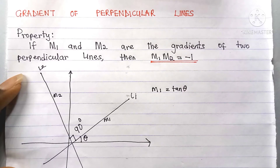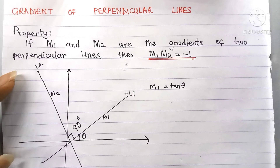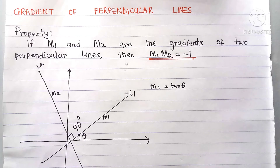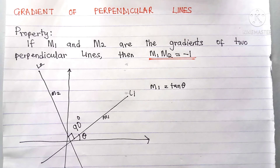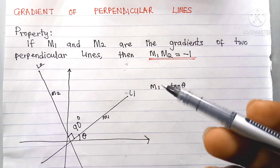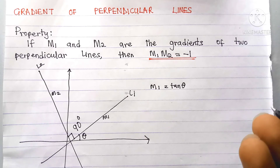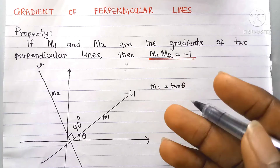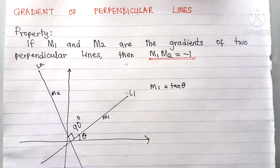Why is m1 equal to tan theta? The gradient of a line is equal to the tangent of the angle the line makes with the positive x-axis — that is, the tangent of the angle the line makes with the x-axis towards the right. So since l1 makes the angle theta with the positive x-axis, m1 is equal to tan theta.